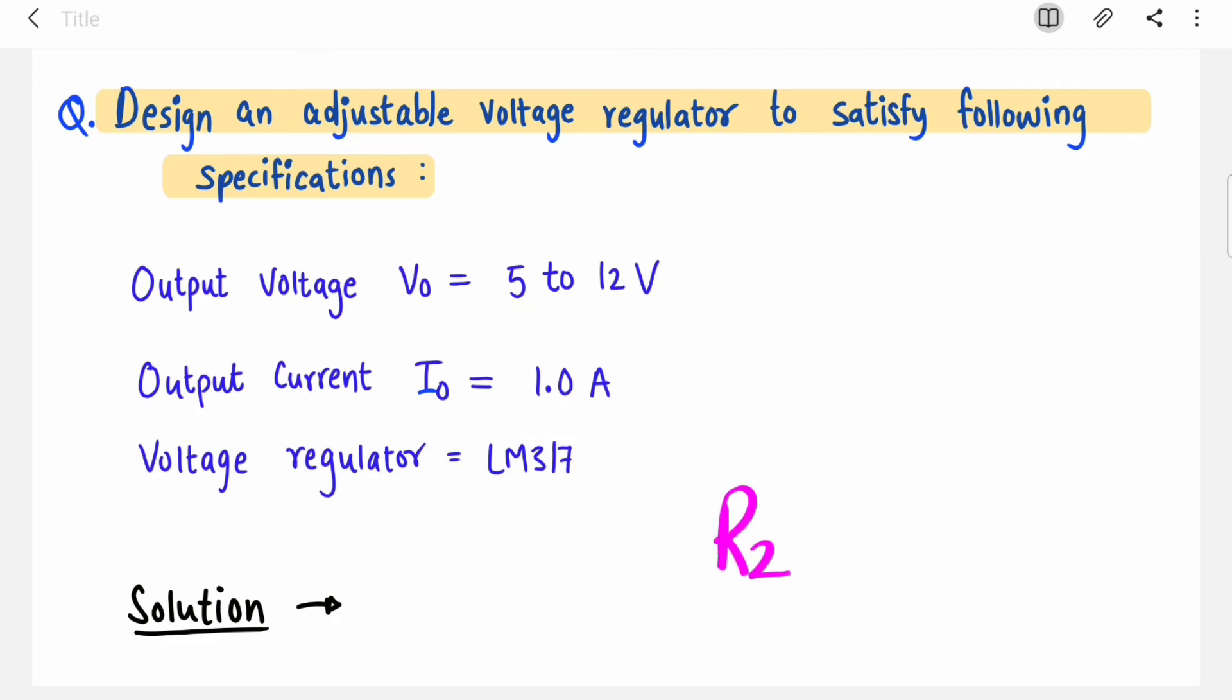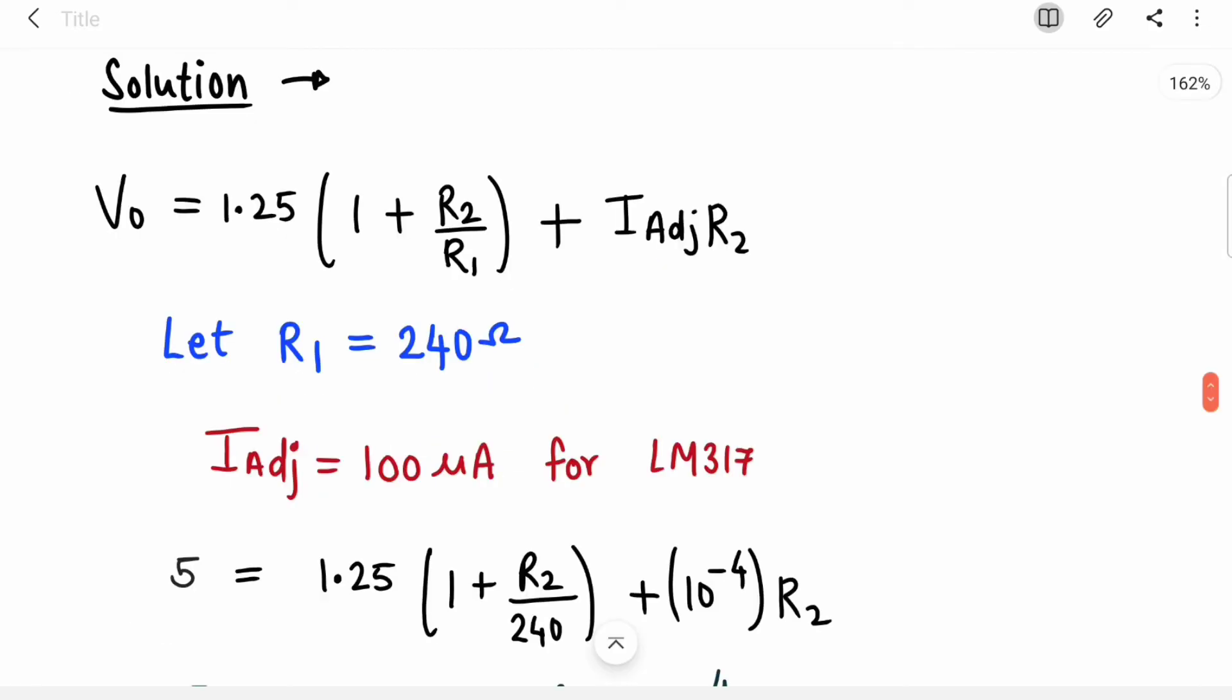Basically you have to find the value of R2 only. We have the output voltage equation. Now we need to fix the value of R1 resistor. Let's keep it 240 ohms. For LM317, I_adj is 100 microamperes, so let's consider that as well.